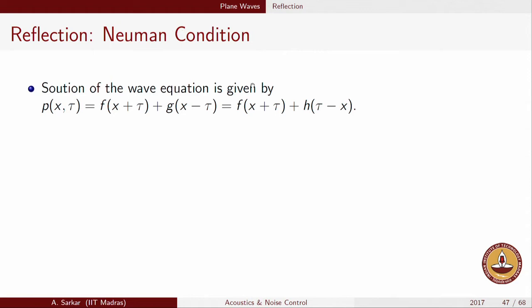We will now see the same condition happening with Neumann boundary conditions. The Neumann boundary condition is the condition wherein the gradient of the variable of interest — pressure in this case — is enforced to be 0. We pick up the thread from the solution of the wave equation. The general solution is an f function and a g function, where the argument of f is x plus tau and the argument of g is x minus tau. If we redefine a new function h such that h of minus x equals g of x, equivalently g of minus x equals h of x, then g of x minus tau becomes h of tau minus x.